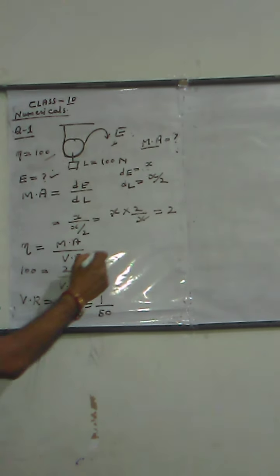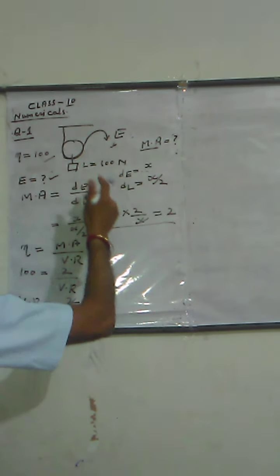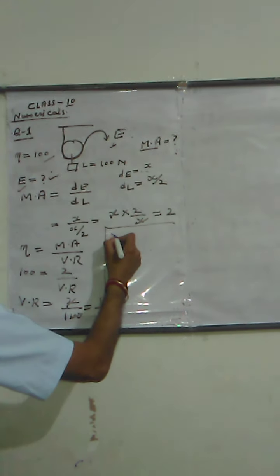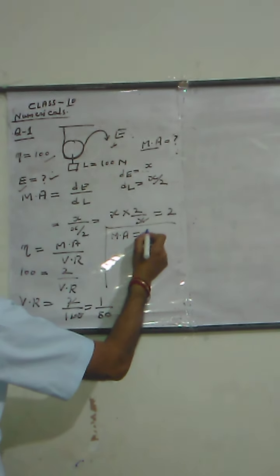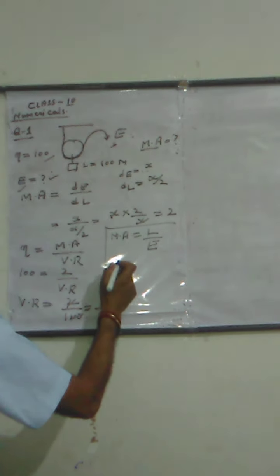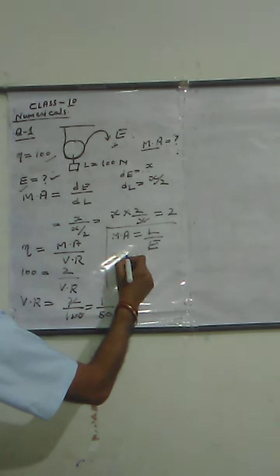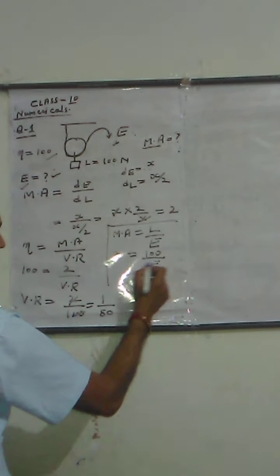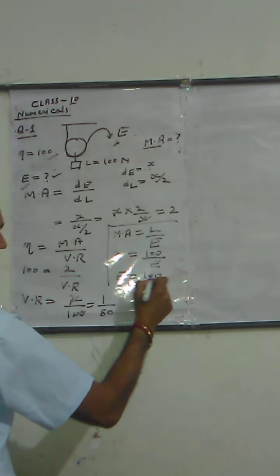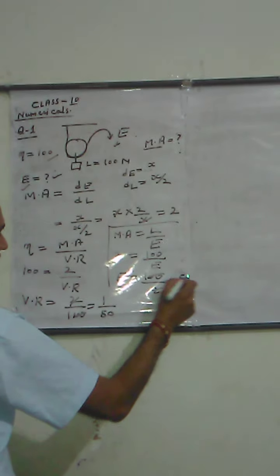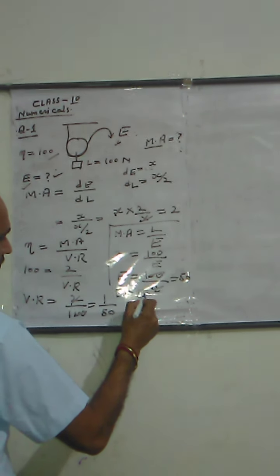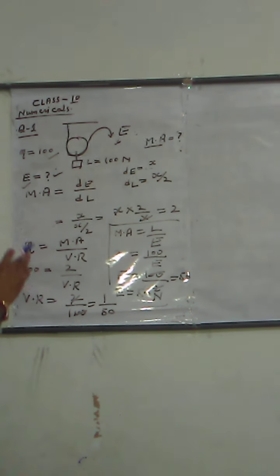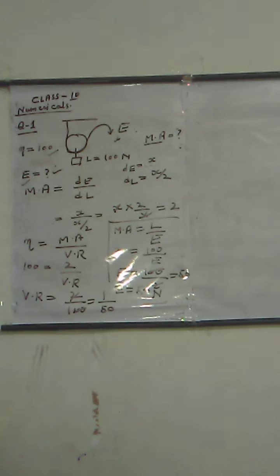Now we find effort. We know that mechanical advantage equals load upon effort. Mechanical advantage is 2, load is 100 Newton. So effort equals 100 divided by 2, which gives 50. So effort equals 50 Newton. We have now calculated all three quantities.